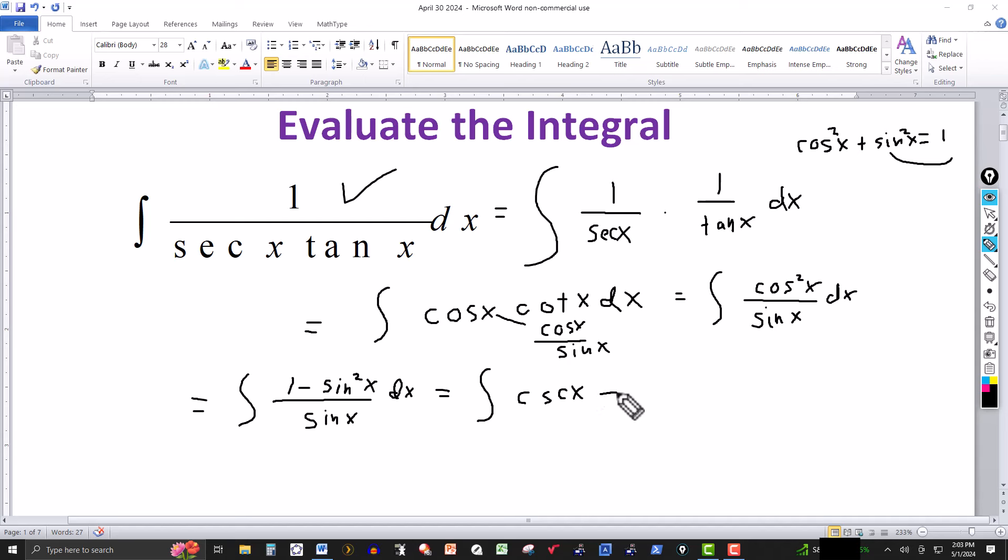And then that's minus... I have a sine squared over the sine of x, so one factor cancels out. That simplifies to that. So this becomes the integral of cosecant of x minus sine of x dx.